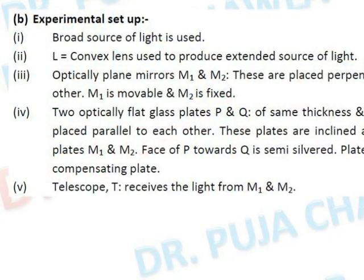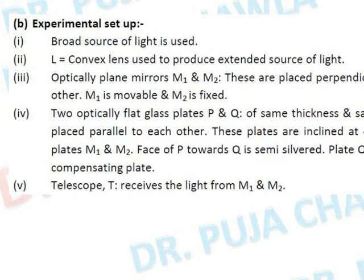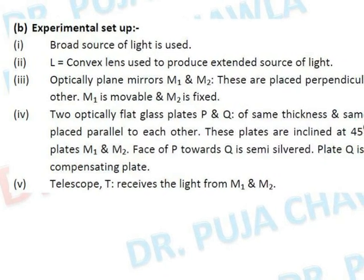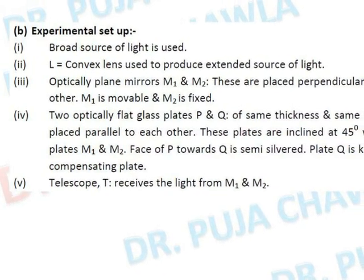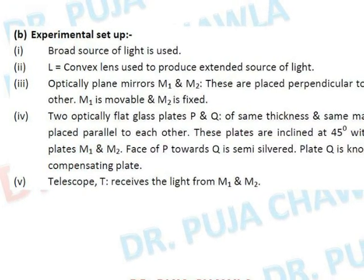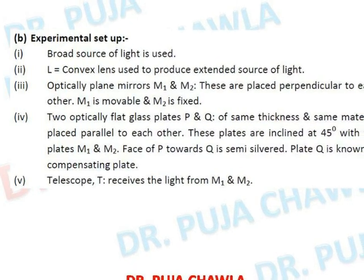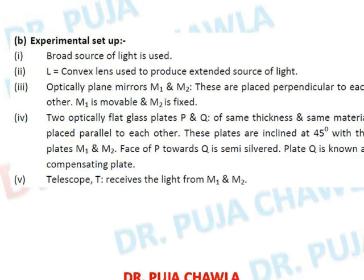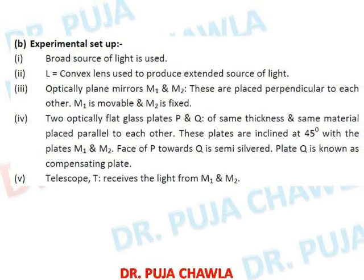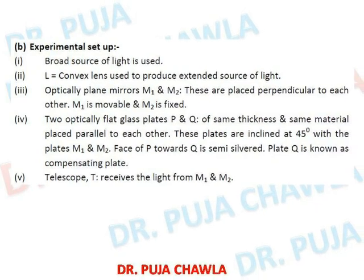To summarize the construction: a broad source of light with convex lens L makes the source extended. Optically flat mirrors M1 and M2 are perpendicular to each other — one mirror is movable and the other is fixed. Two optically flat glass plates P and Q are present; initially assume only P is present, and we will discuss Q later. Telescope T receives light from mirrors M1 and M2.